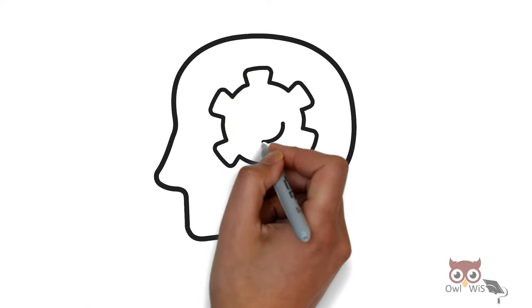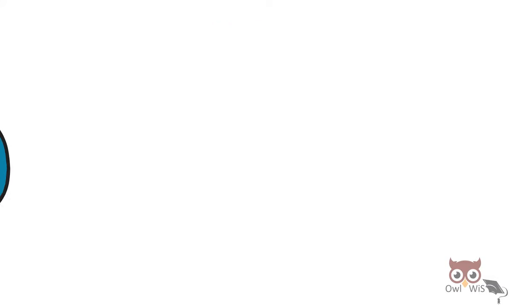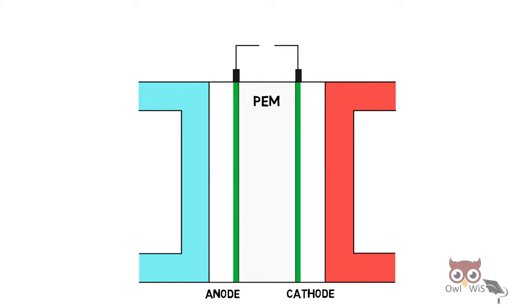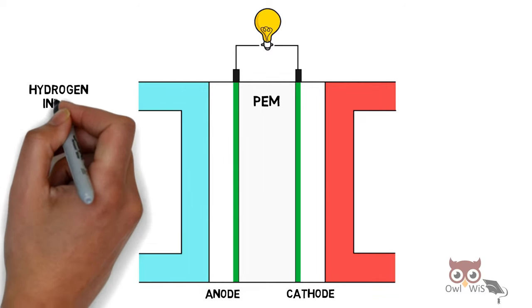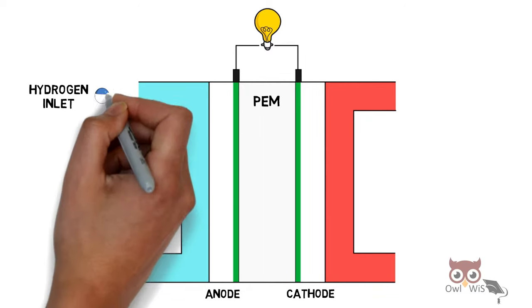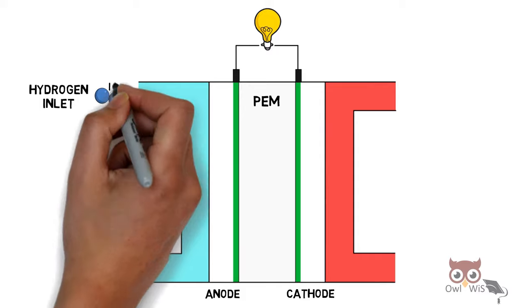Let us understand the working. As you can see, a bulb is connected as a load. From the hydrogen inlet, the hydrogen is taken in.